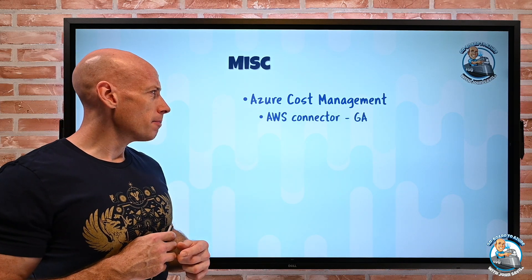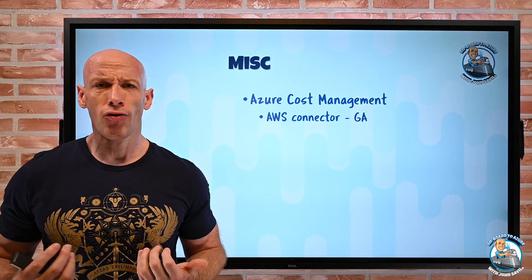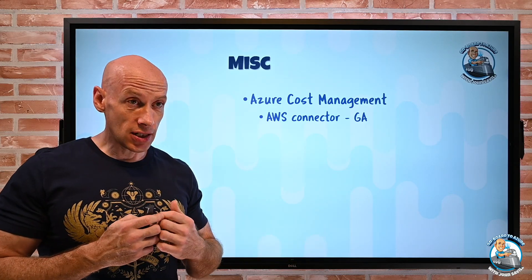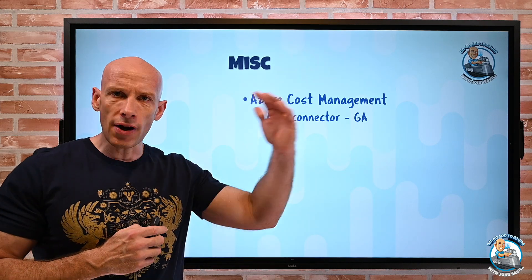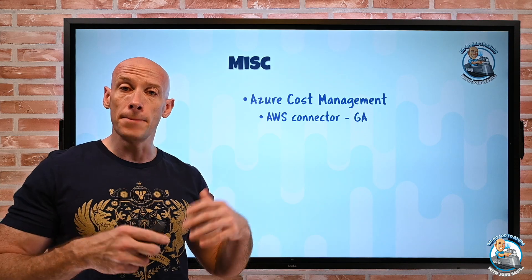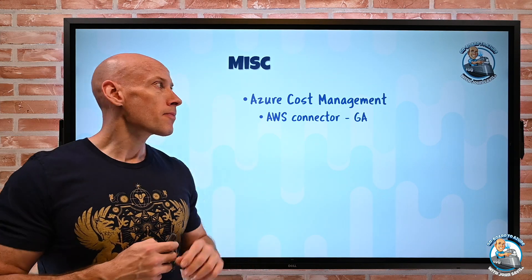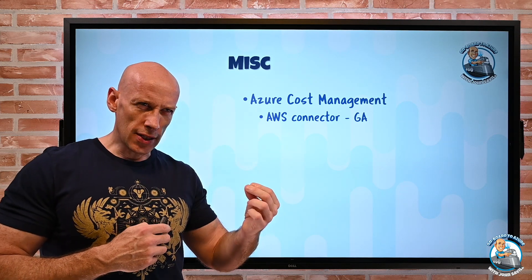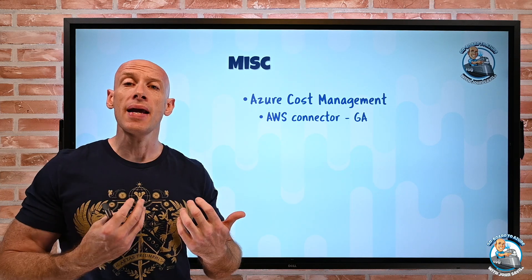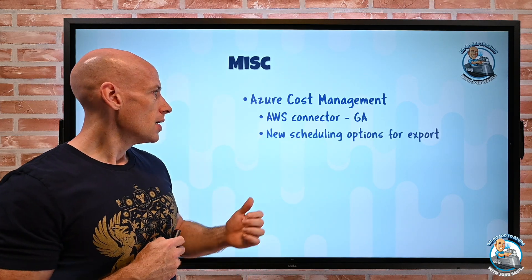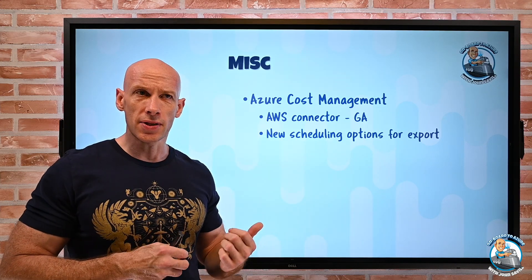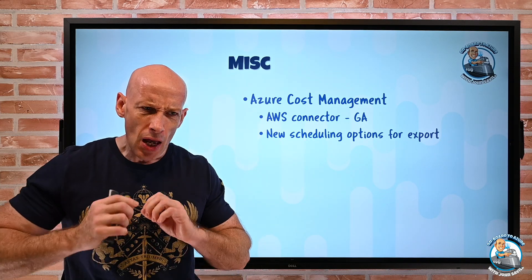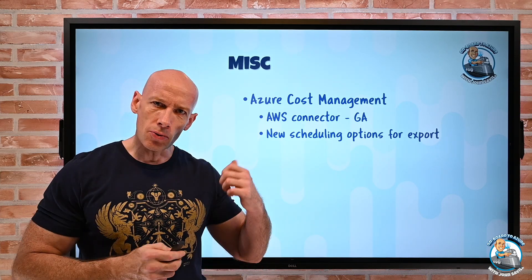Azure Cost Management has a bunch of updates. There's an AWS connector now in GA — it's been in preview for a long time. I can connect Azure Cost Management to AWS and start seeing costs at various levels like management groups and accounts, combine them, and set budgets to trigger alerts. This is free for the first 90 days, then it's a paid service costing about 1% of managed spend on AWS. There are also new scheduling options for export — better weekly and monthly options, ability to pick a start date, and you can do a one-time export of up to three months of data.